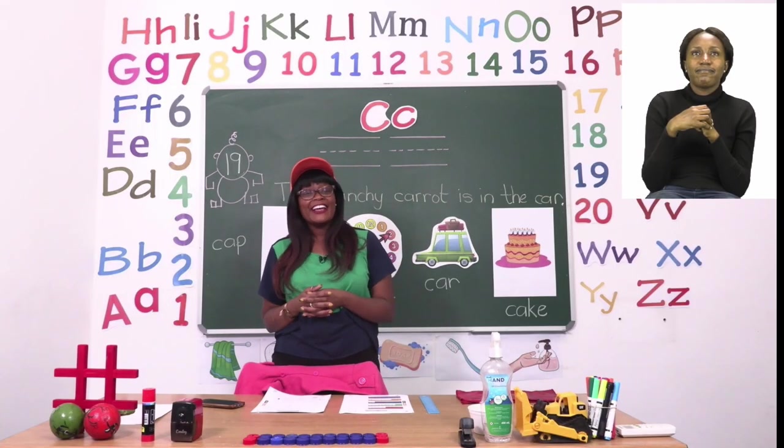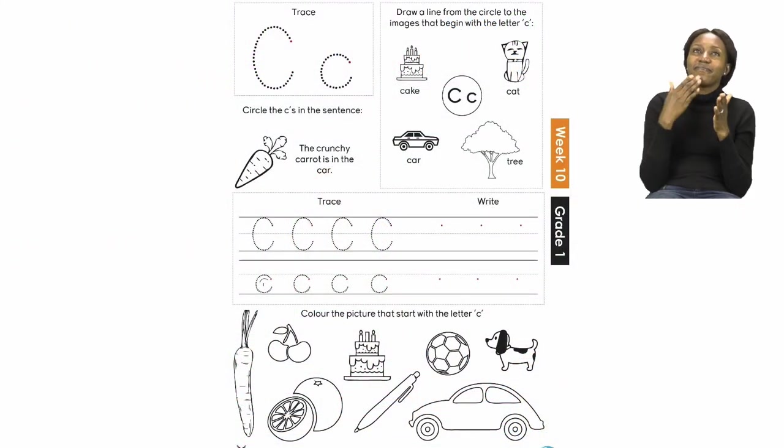Now boys and girls let's do something fun on page 19. On page 19 we are going to be doing the k sound. Now the k sound has two letters a capital letter K and a small letter k. You are going to trace and write both the capital letter K and the small letter k. After that you are going to draw a line from the circle to the images with the letter k. We have a cake, cat, tree, car. Remember only the ones that have k in them. And then you're going to circle the k sound in the sentences. Then after that you are going to color all the things that start with k at the bottom of your page.